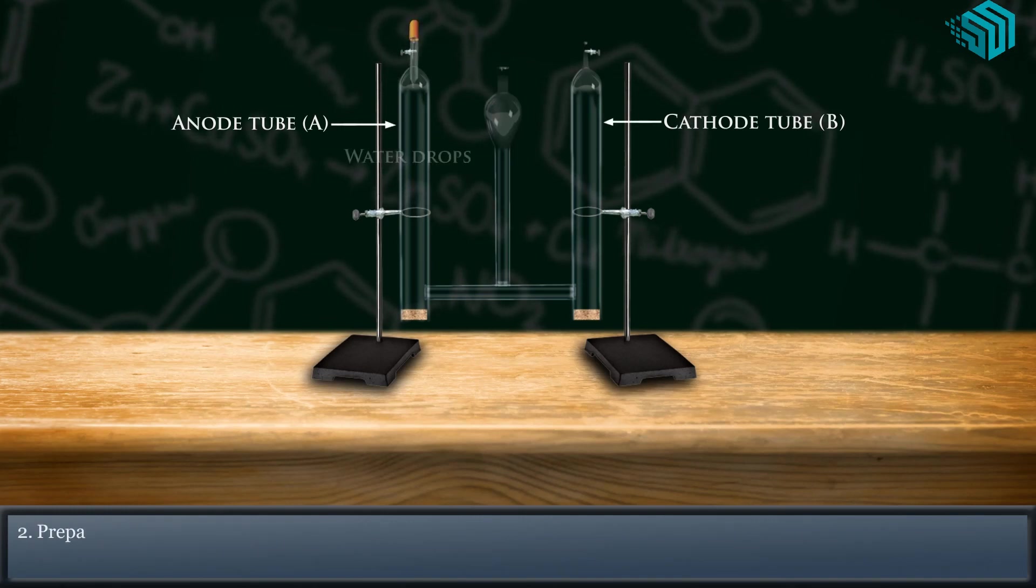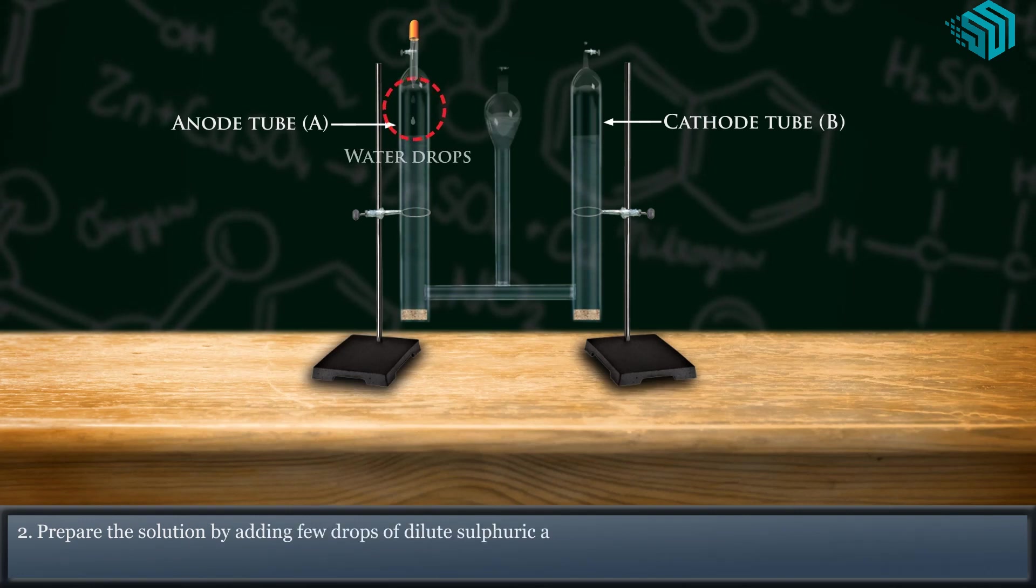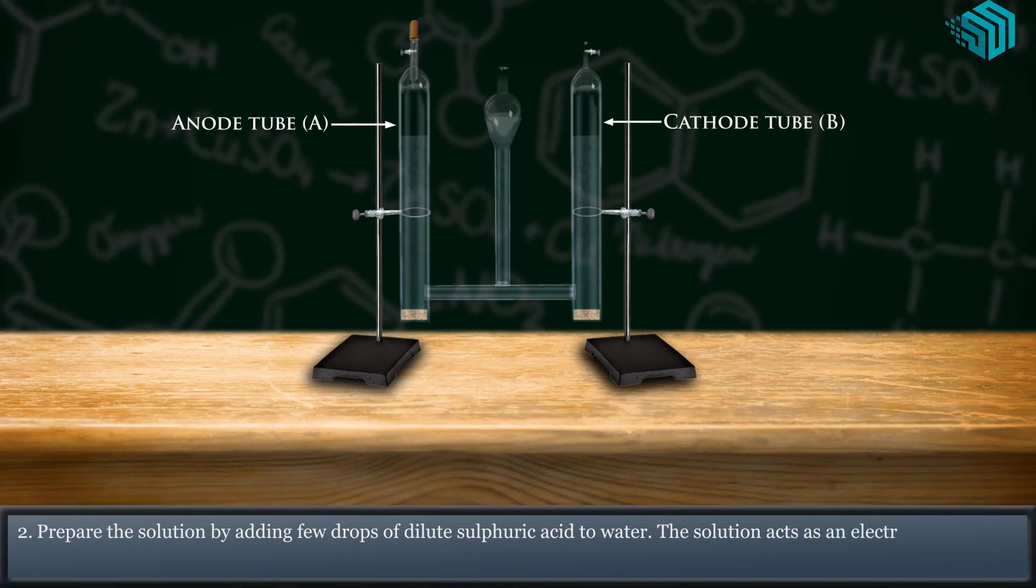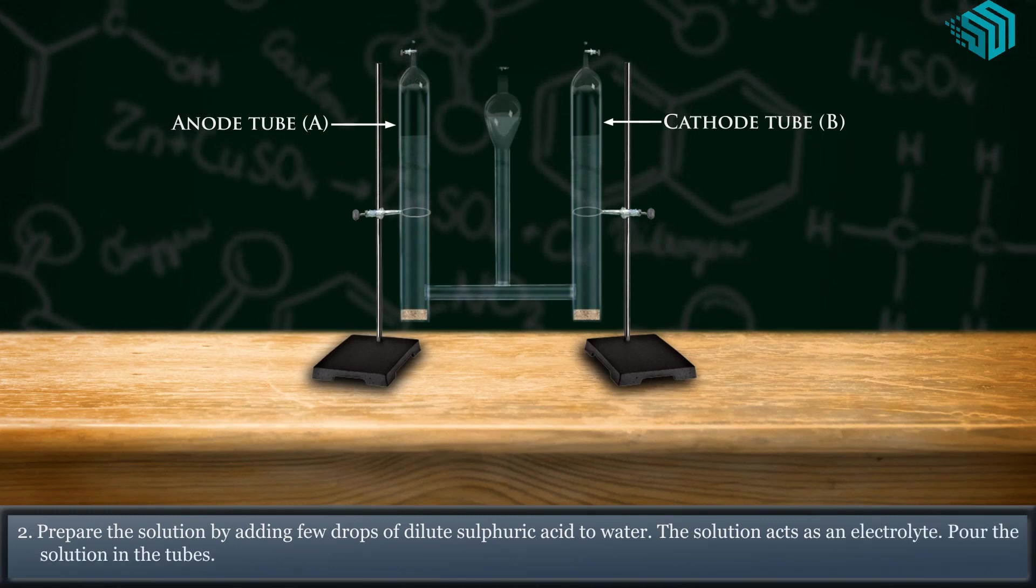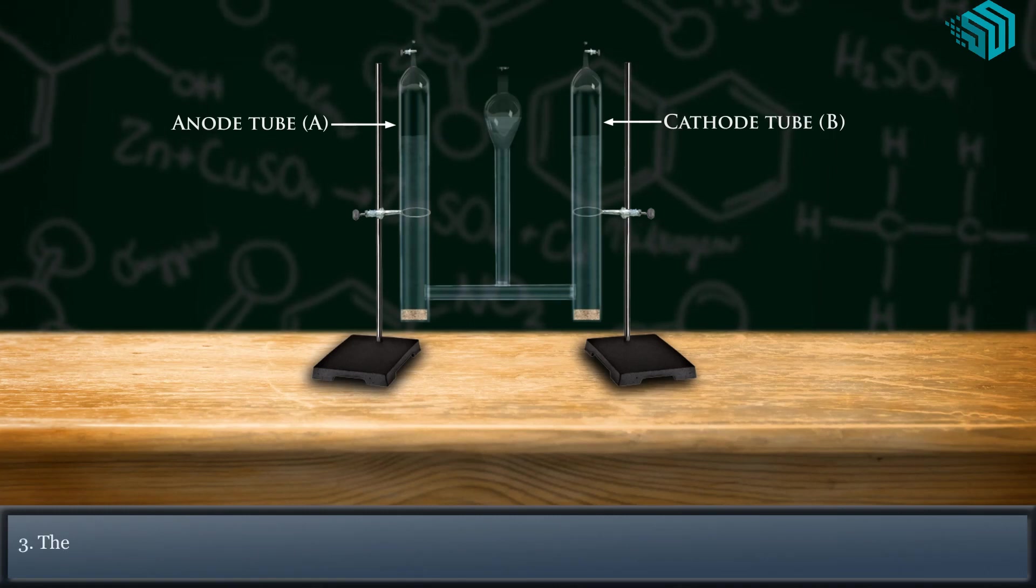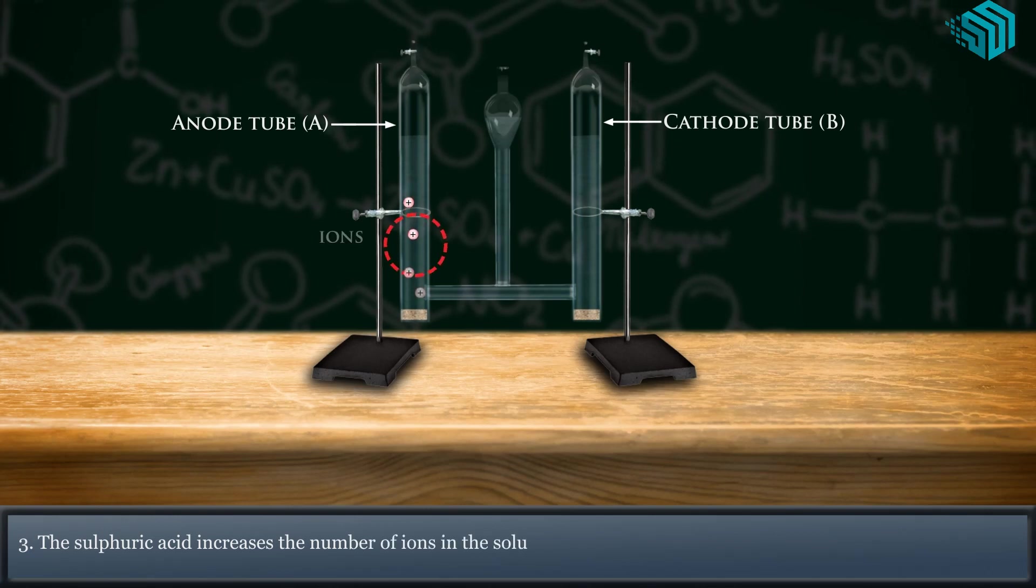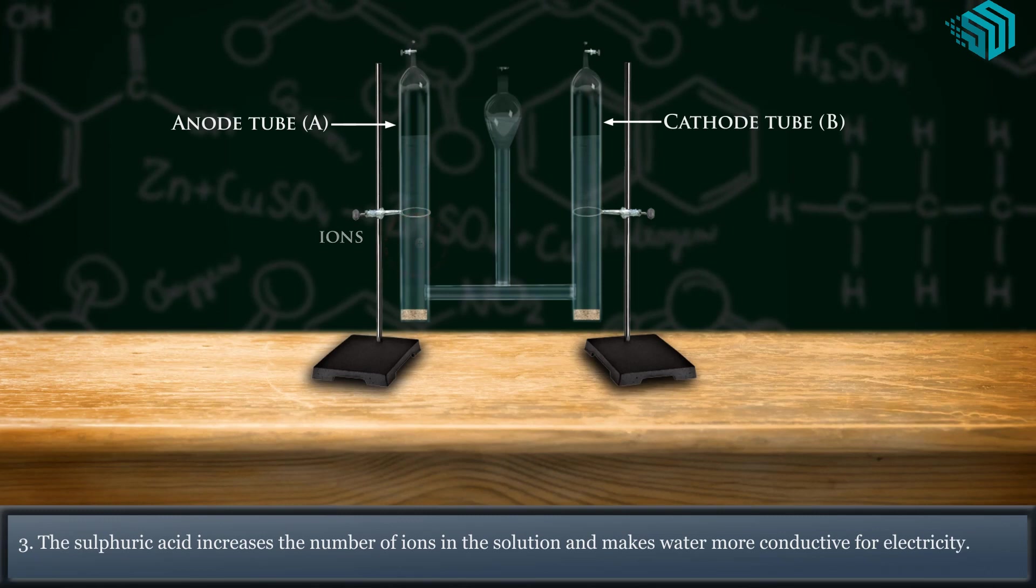Prepare the solution by adding few drops of dilute sulphuric acid to water. The solution acts as an electrolyte for the solution in the tubes. The sulphuric acid increases the number of ions in the solution and makes water more conductive for electricity.